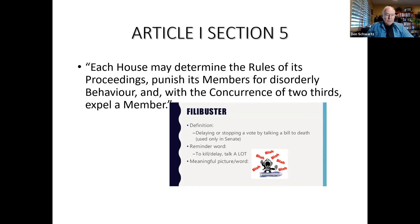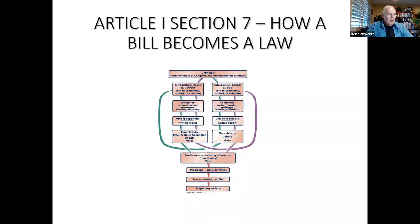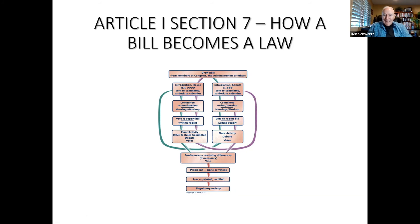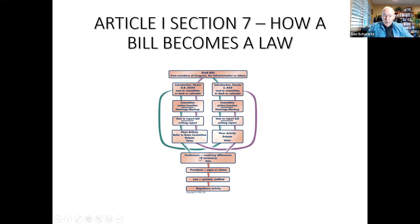Section 7 of Article I states that all money bills must originate in the House, because the House is elected by the people. Section 7 also describes how a bill becomes a law. A bill can be introduced in either the House or the Senate — unless it's a money bill, then it must be introduced in the House. A bill that is introduced goes to committee; the committee votes whether to send it to the floor; if sent to the floor, it is debated and voted on. A similar procedure takes place in the Senate.